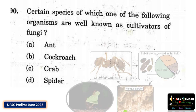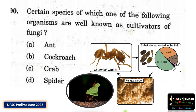The answer is ants. Ants are well known as cultivators of fungus. Inside the nest, leaf cutter ants carry fresh leaves to feed this fungus, and this fungus in turn provides food for the larvae of the ants. It's a kind of symbiosis and mutually beneficial association.